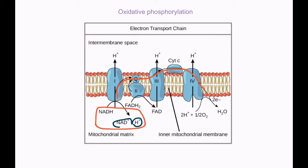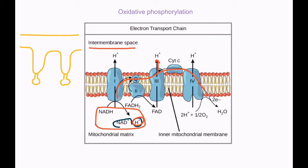The energy from the electrons is used to pump the protons out into the intermembrane space by active transport. Remembering the diagrams: the stalked particle is formed of a protein channel and ATP synthase, and the proteins on the inner membrane pump hydrogen ions into the intermembrane space.